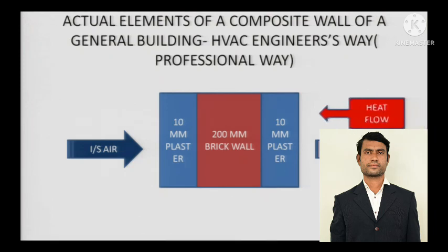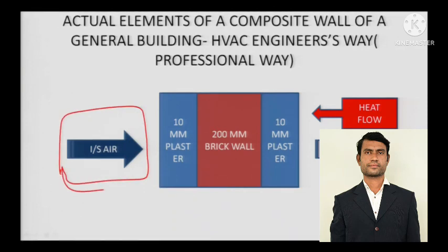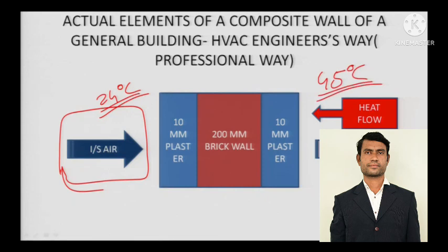Now this is the heat flow. Suppose if we are air conditioning this particular area — maintaining it at 24°C, which is the human comfort temperature — and suppose we are talking about peak temperatures in Delhi, which can be 45°C or even more on some days. So taking it as 45°C, the Delta T is approximately 20°C.